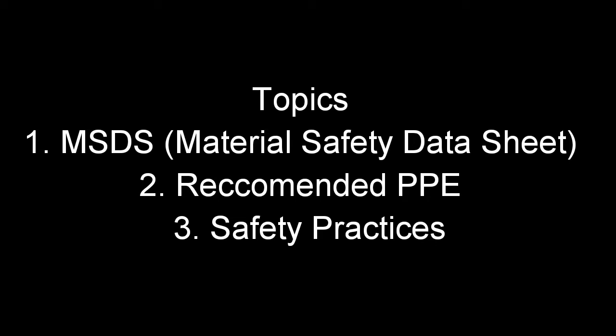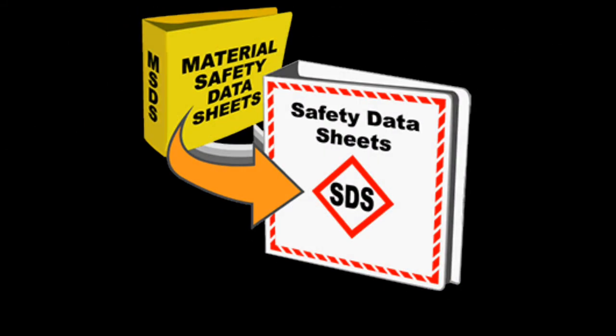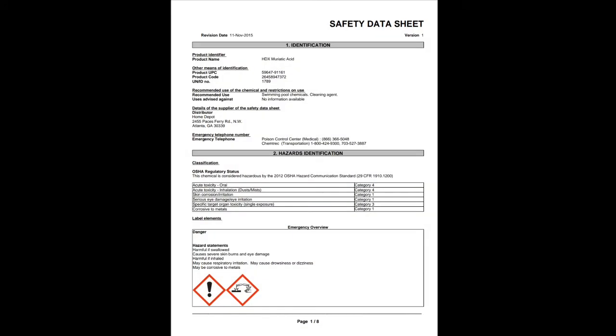Material safety data sheets are important to know and be familiar with, as they provide information about the chemicals that you are using. This is what a safety data sheet looks like — it's very important to be familiar with the information in this document for the chemical you're working with.